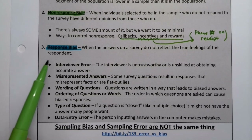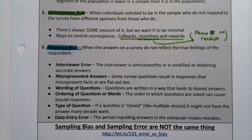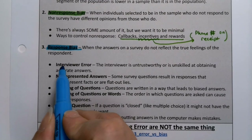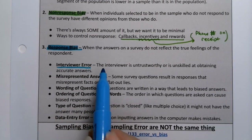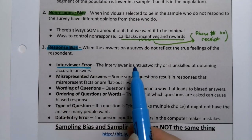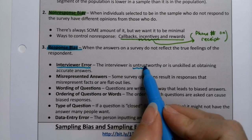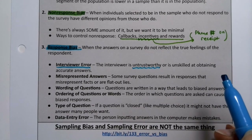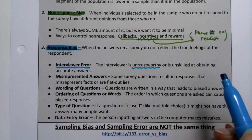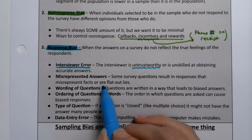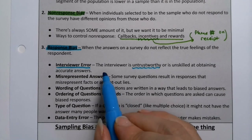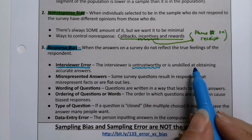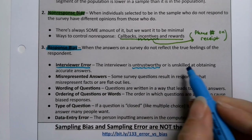Then there are all the response biases. There's interviewer error, which comes down to a variety of factors. The interviewer could be untrustworthy — somebody you can't trust to tell the truth to — or they're not skilled at obtaining the right answers. Maybe they don't follow the script like they're supposed to.